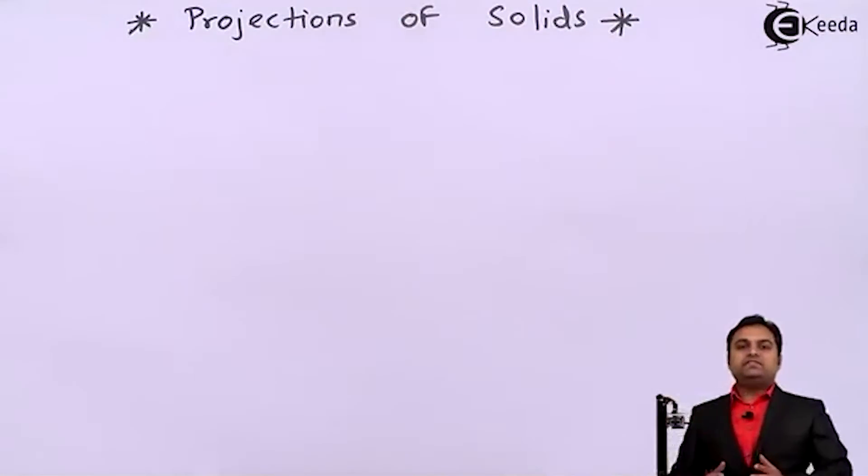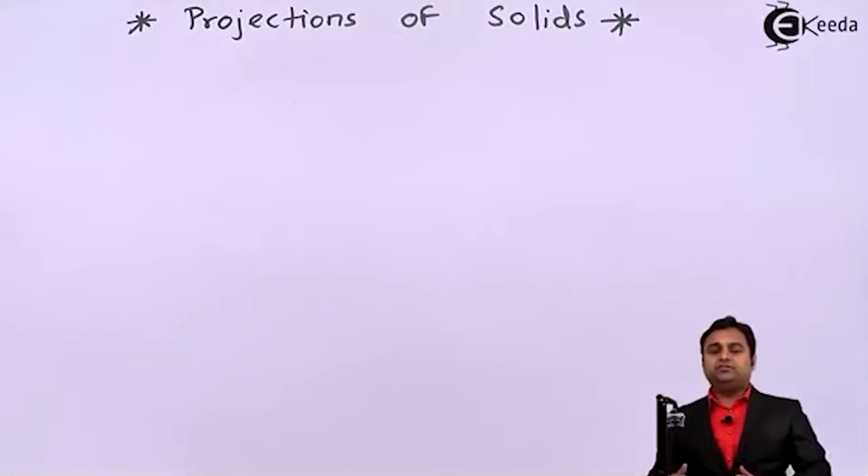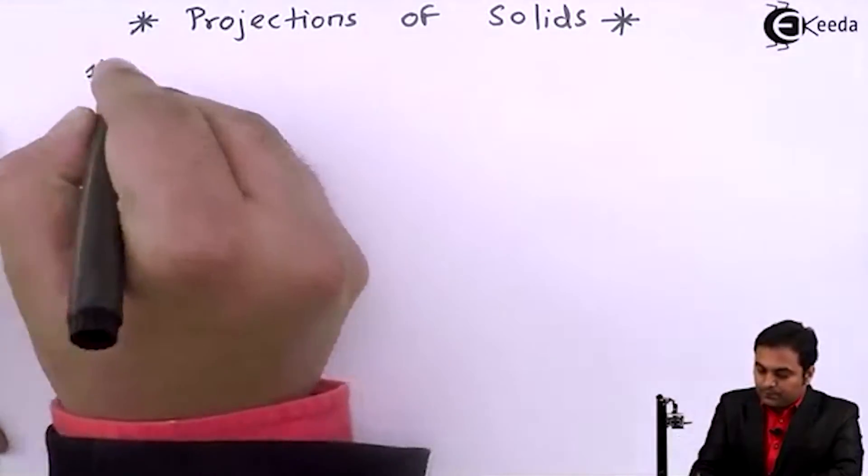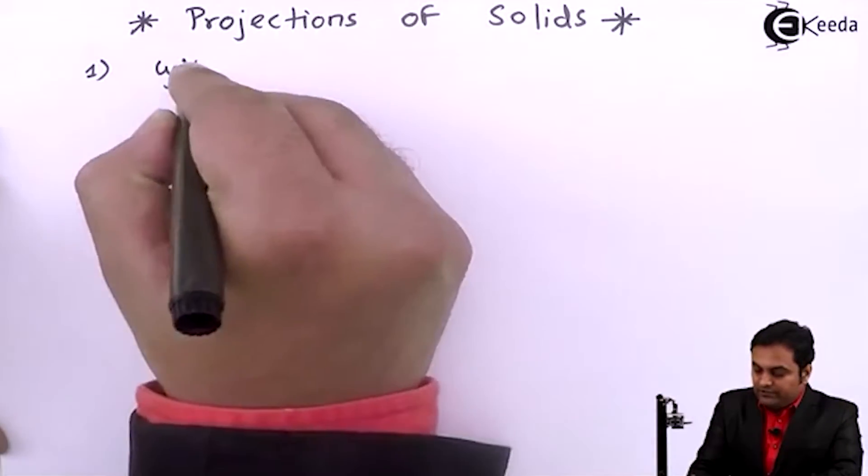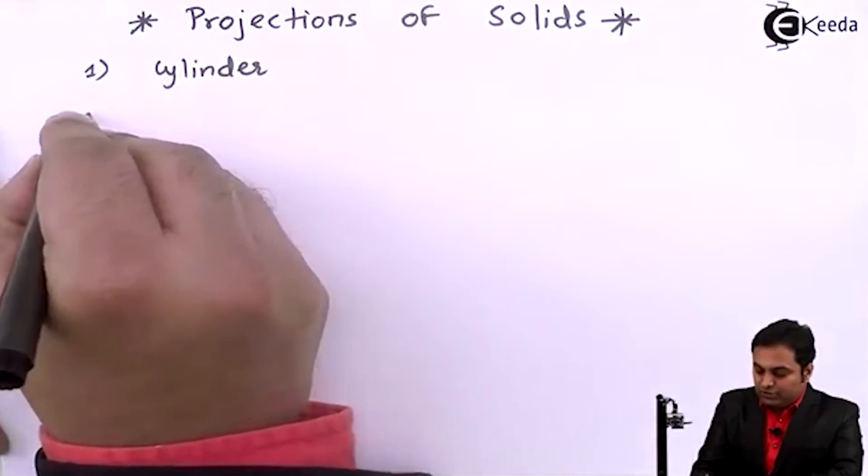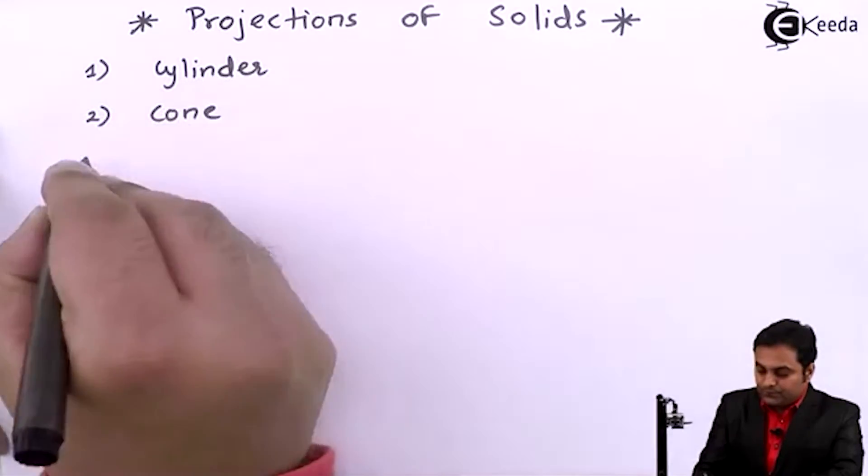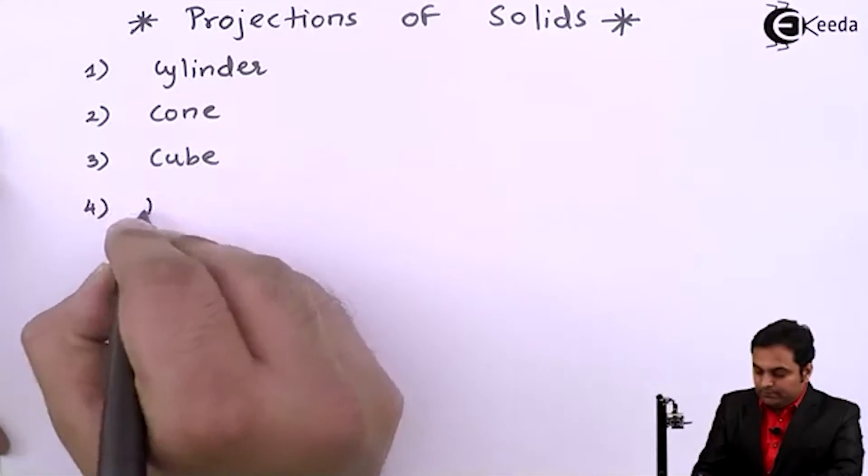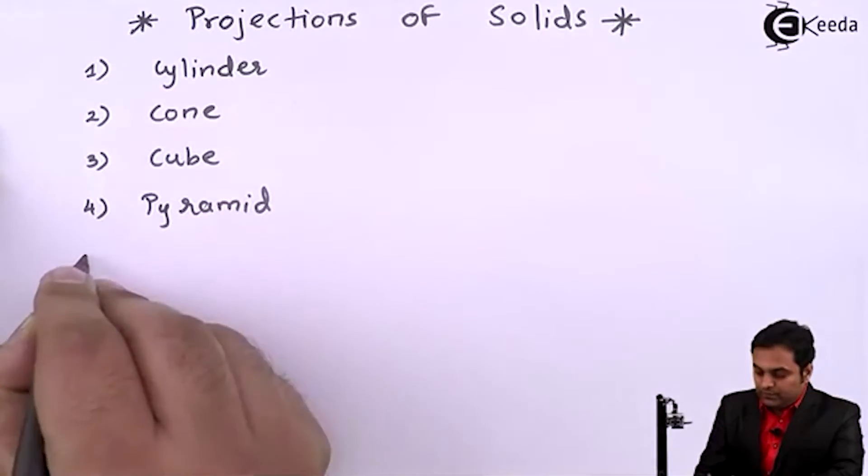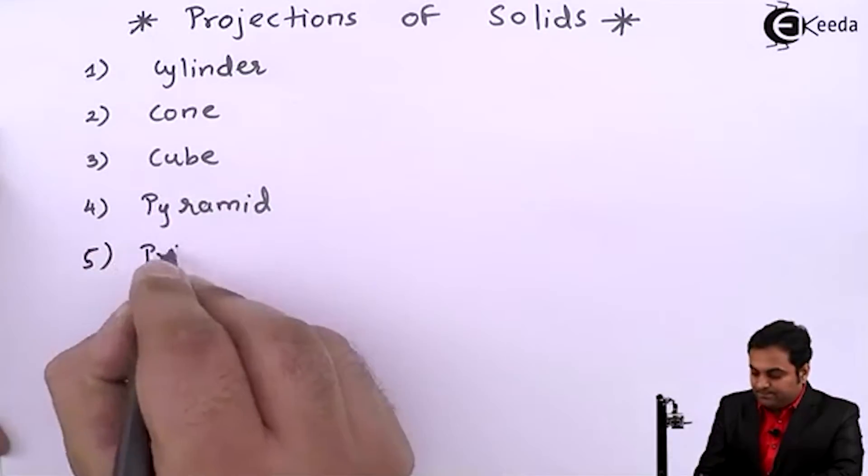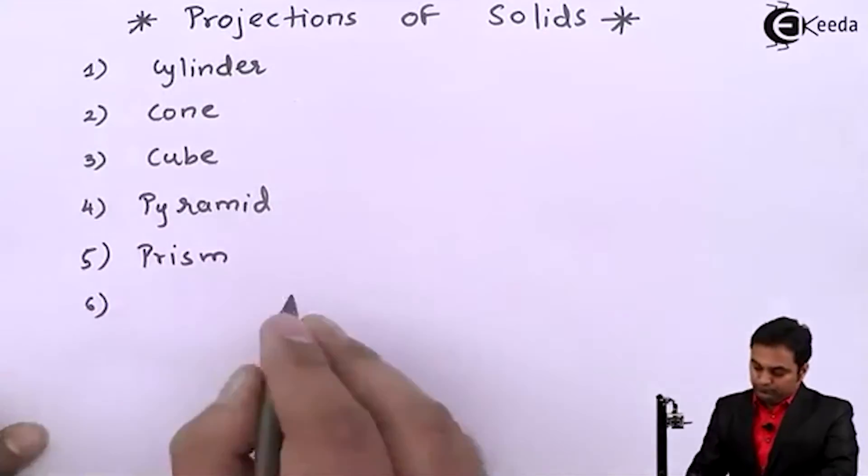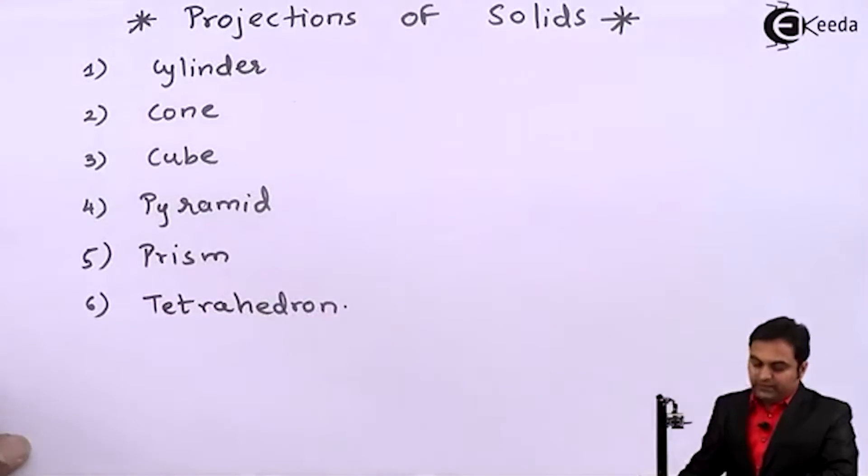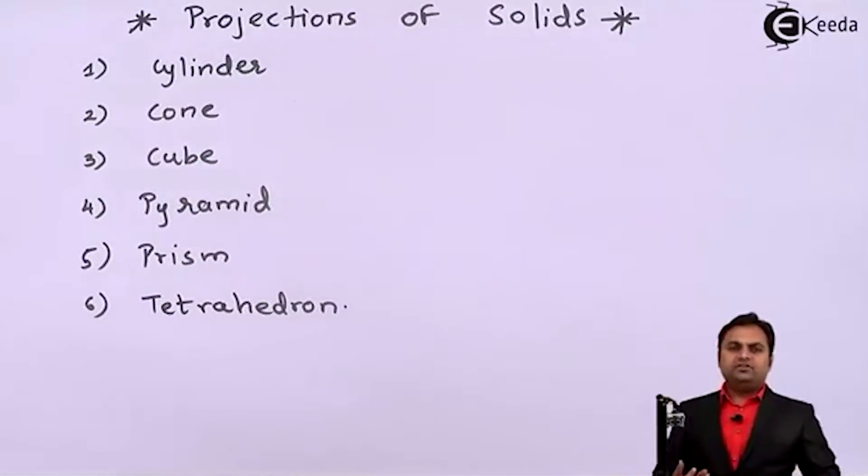Projections of solids - in this basically we need to know how many kinds of solids are there. Like for example, cylinder is considered as a solid. Then there is cone, cube, pyramid, prism, tetrahedron, and etc. These are the kinds of solids.